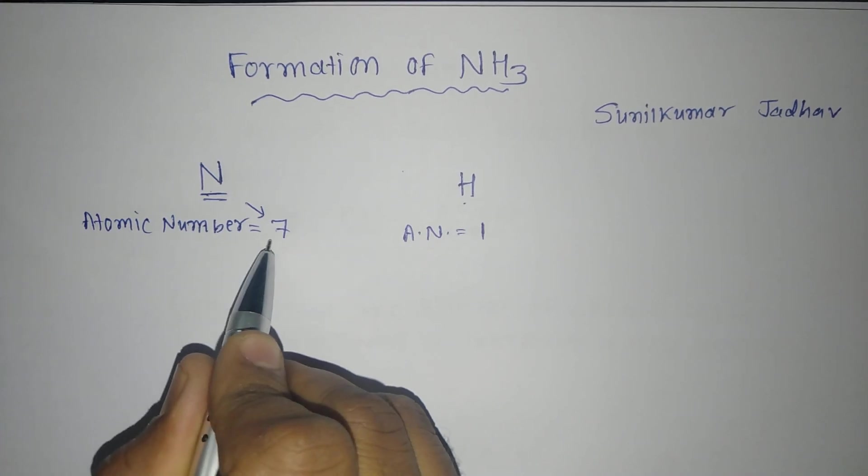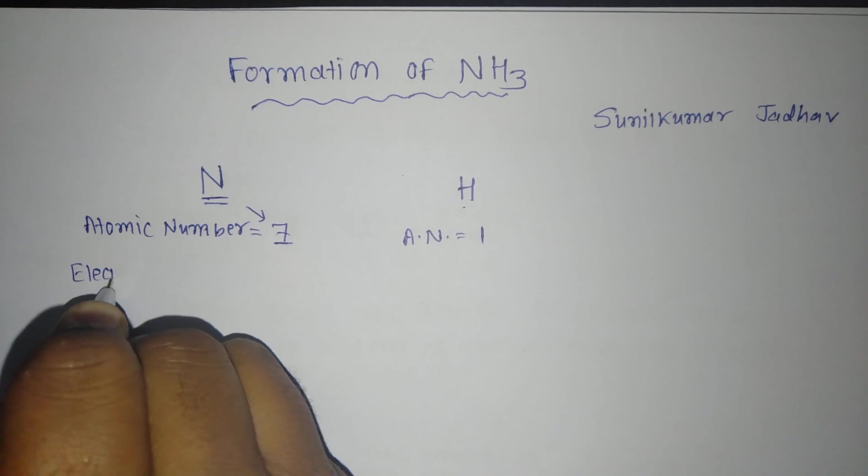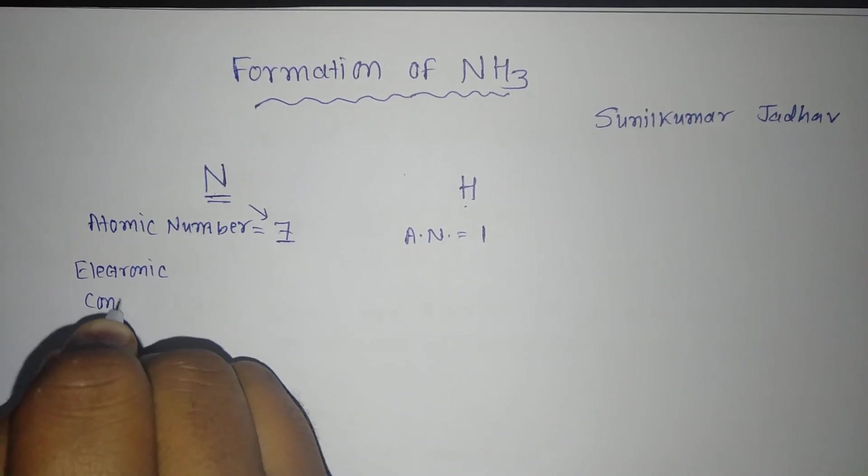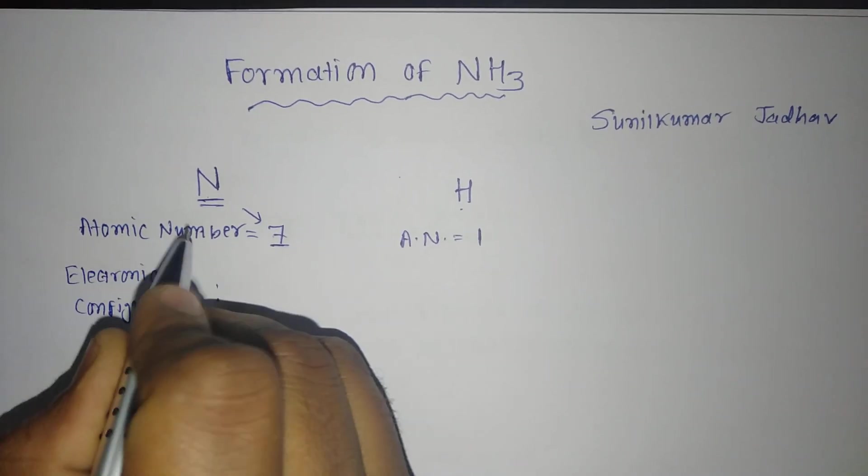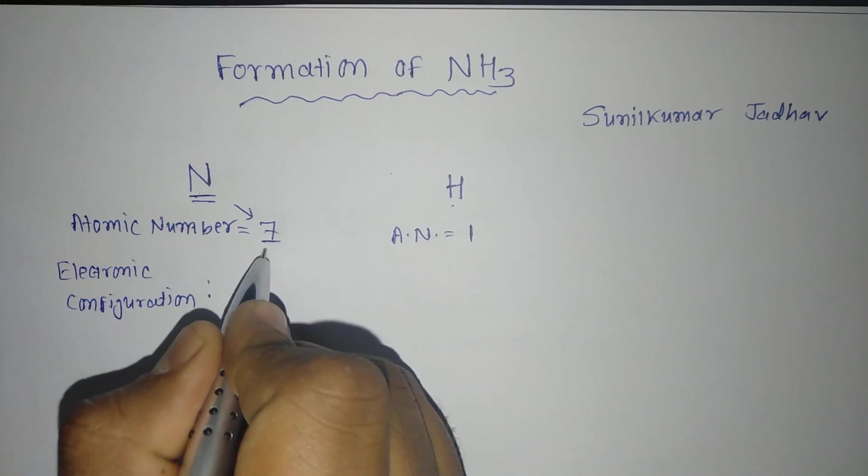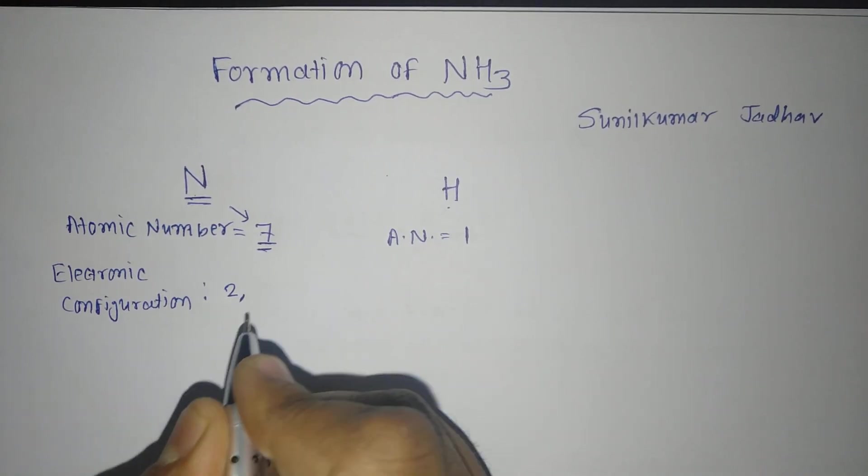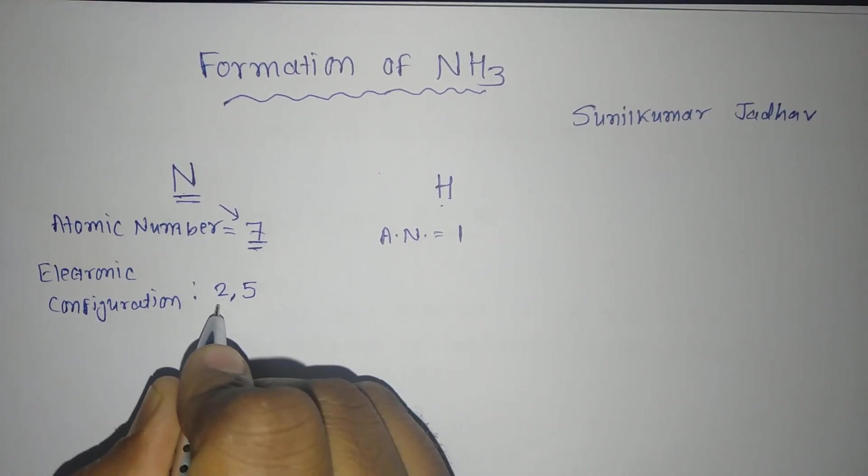If we write the electronic configuration of both of them, first of all I will write it for nitrogen. You know electronic configuration—there are 7 number of electrons. So first orbit there will be 2 number of electrons. In the next orbit there will be 5 number of electrons, 2, 5.